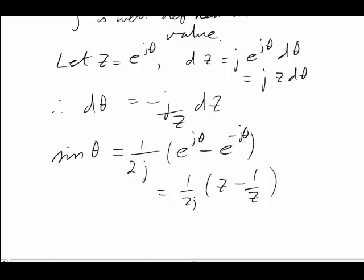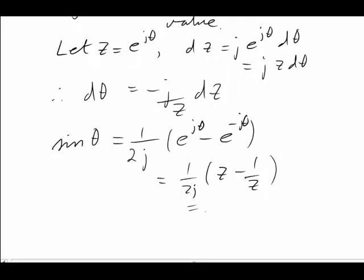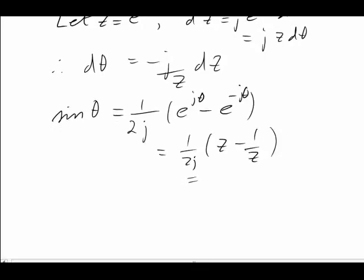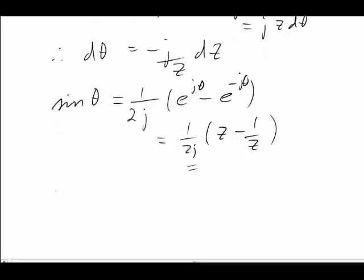So a little bit different to the cos, especially because of the presence of the j there. It's not going to hurt us though. Our integral will just transform as usual to the contour integral around mod z equals 1.